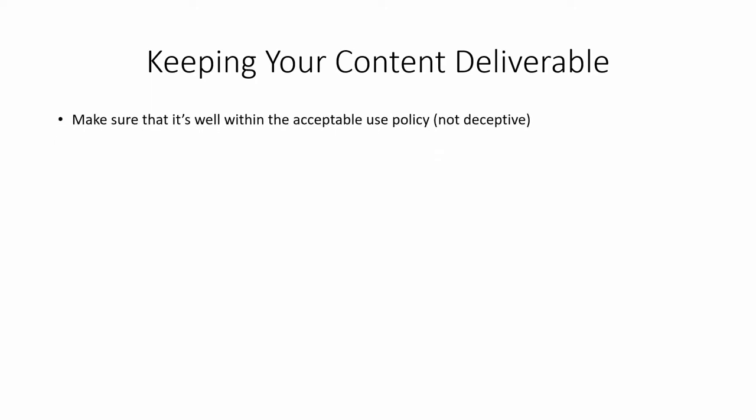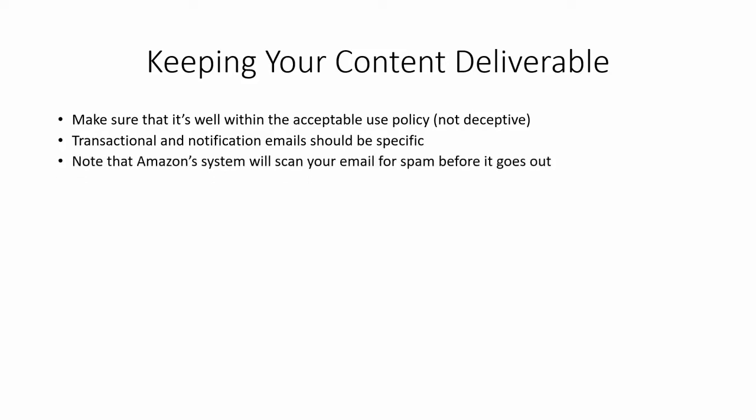Part of the process of working with Amazon SES is making sure your content is such that your emails will be deliverable and you'll avoid hard bounces. Make sure everything in your email is within the acceptable use policy. Amazon is looking to ensure you're not deceiving anyone, not doing a bait-and-switch, and that your email delivers exactly what it says it will. Transactional or notification emails should be specific — complying with whatever the subscriber bought or opted into.